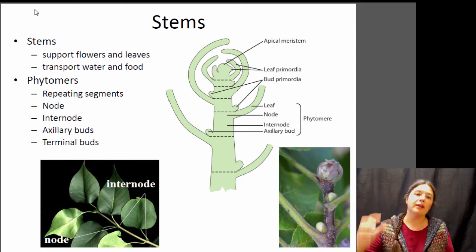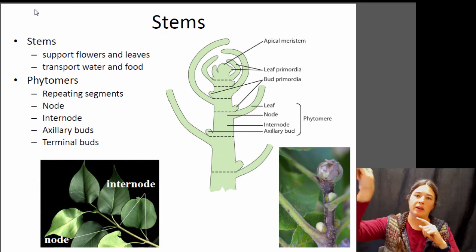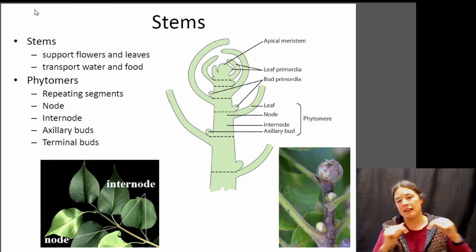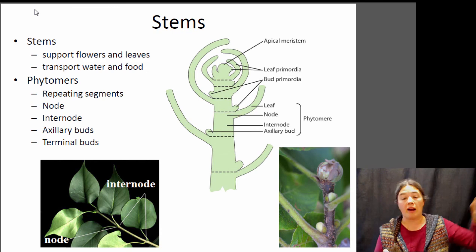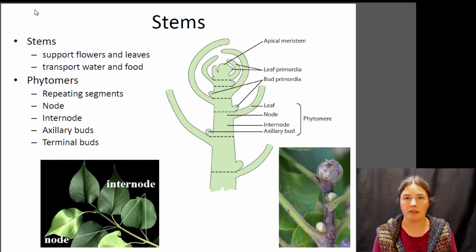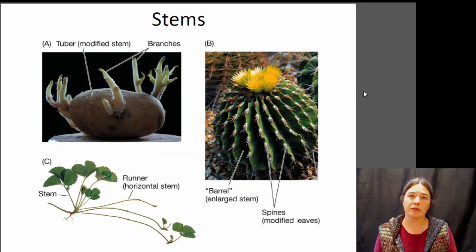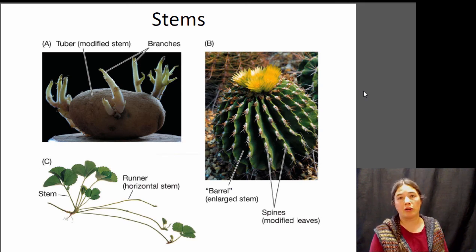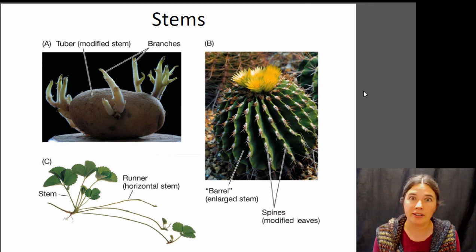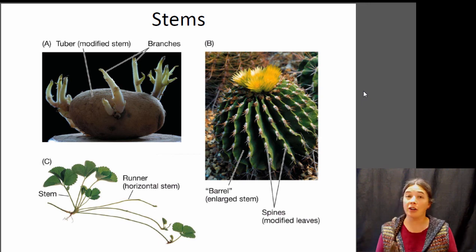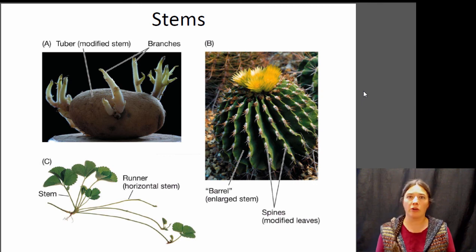At the end of the stem is the terminal bud — that's where new material grows and the only place where the stem can actually grow longer. At each of the nodes are axillary buds — these are where new branches, leaves, or flowers arise off the sides of the stem. Stems can also be specialized for specific functions. Some stems are specialized for storage of nutrients — like a potato, which is an underground stem that stores sugars for the plant. When a potato goes bad, more stems grow out of it, and that's how you know it's a stem.